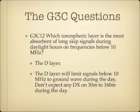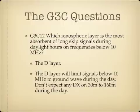Which ionospheric layer is the most absorbent of long-skip signals during daylight hours on frequencies below 10 MHz? It's the D layer again. The D layer limits signals below 10 MHz to ground wave propagation during the day — don't expect any DX on 30 or 160 meters during the day. At night, the D layer disappears and those lower frequency bands really open up.